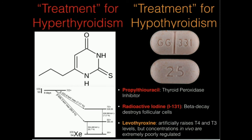Thyroid hormone overall increases the metabolic rate. In hypothyroidism, you tend to be sluggish, tired, have a low metabolic rate, and gain weight easily. Leptin, a hormone released by fat cells that promotes satiety, inhibits the release of thyroid hormone when levels are high. This creates a vicious cycle: low thyroid function leads to weight and body fat gain, which further suppresses thyroid hormone release. The solution is exercise and a healthy diet.